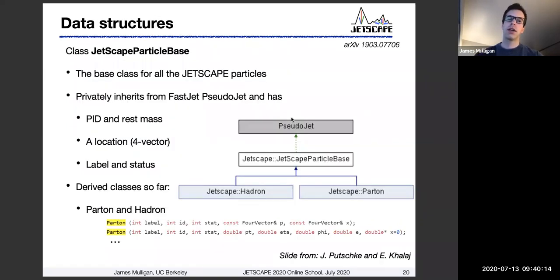Now, there are also a couple of data structures defined in Jetscape that you'll want to be aware of if you're adding some custom code to Jetscape. One of these is the particles themselves are defined through this base class called Jetscape particle base. It's just a very simple class. It actually inherits in particular way from fast jet pseudo jet class. And it just contains the basic particle information that you would expect: some PID, mass, four vector, as well as some label and status field.